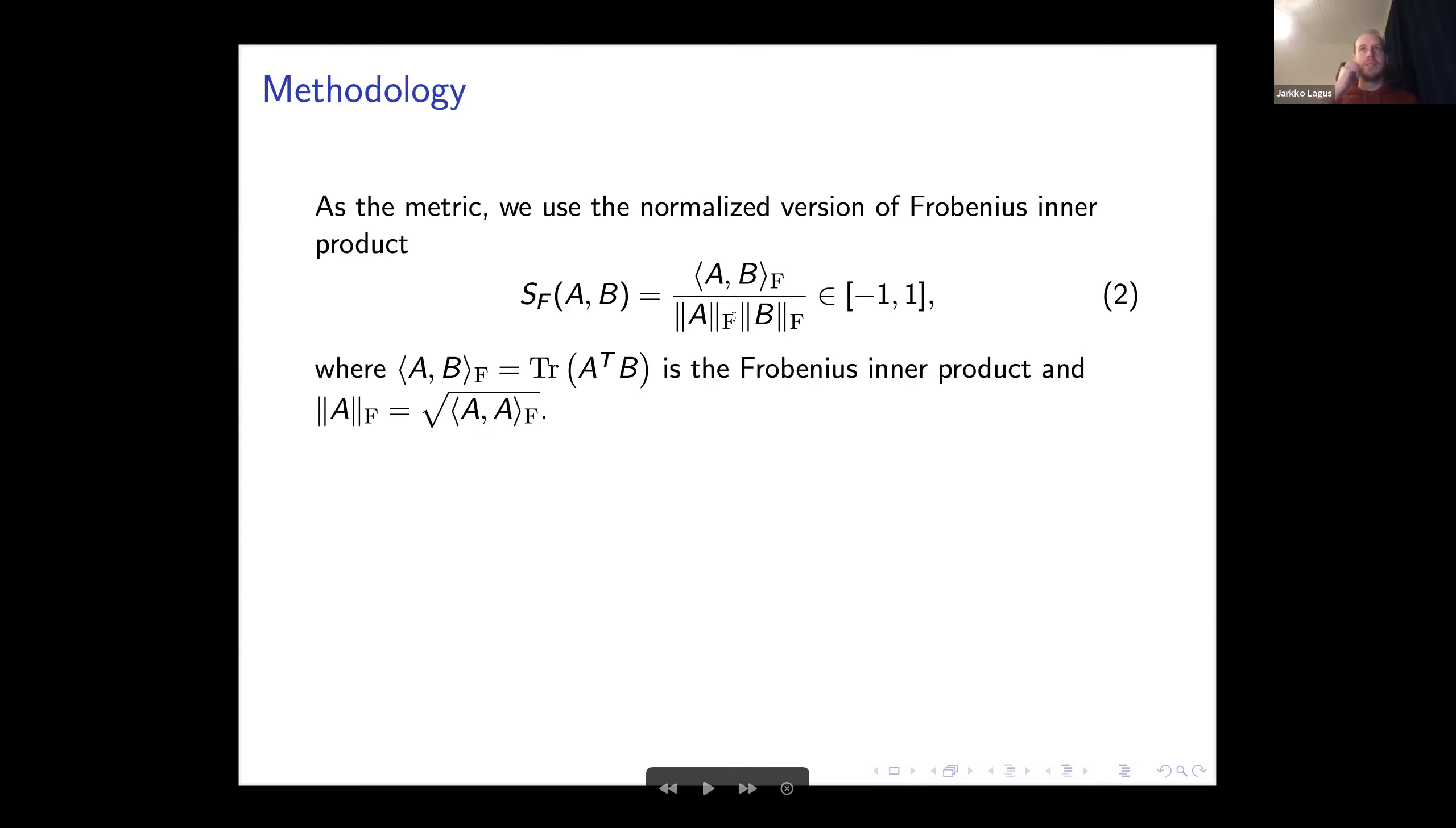You can do this also using singular values. If you compute the Schatten norm, where P equals 2, you'll get the exact same result. But then you have to calculate those singular values, which is much more heavy, and with transformers it can be very unstable.